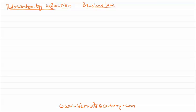Hello everyone, welcome to this video lesson. In this video lesson we would like to talk about polarization by reflection of light, and we are also going to discuss a law called Brewster's law. First of all, polarization is the phenomenon of restricting the vibration of light to only one particular plane. Unpolarized light has vibrations both in the plane as well as a perpendicular plane, and we can restrict them to only one plane by using the reflection property.